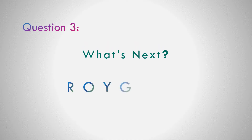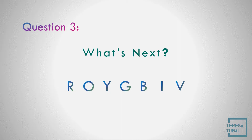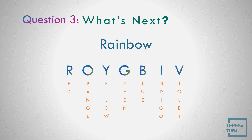What do you think is the next letter after I? Yes, B. After indigo is violet — these are the colors of the rainbow.